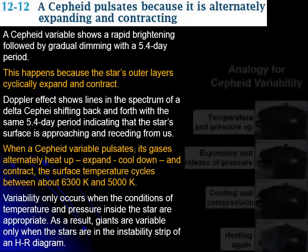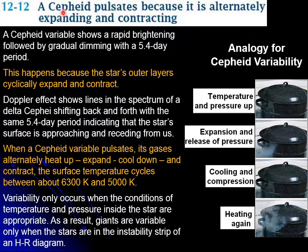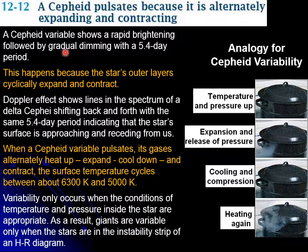This is section 12, looking at the Cepheids. Cepheids pulsate due to expanding and contracting layers. A Cepheid increases its brightness, then grows dimmer, then returns to being bright in a 5.4-day period. This happens because the outer layers get larger and expand, so the surface area and luminosity are both changing.